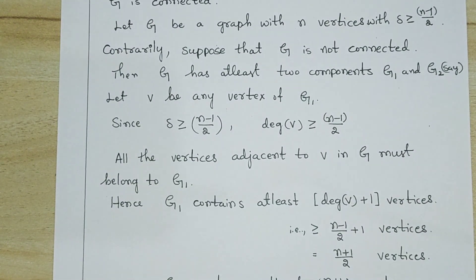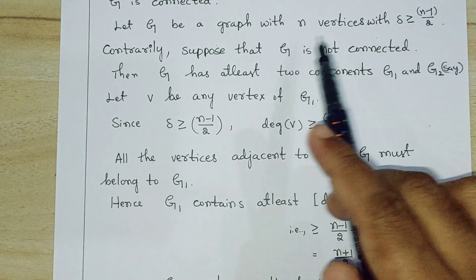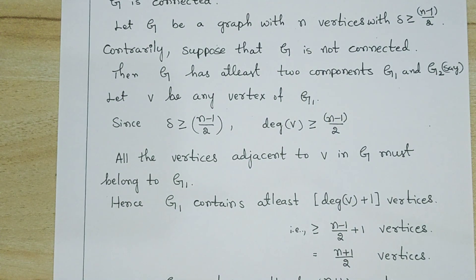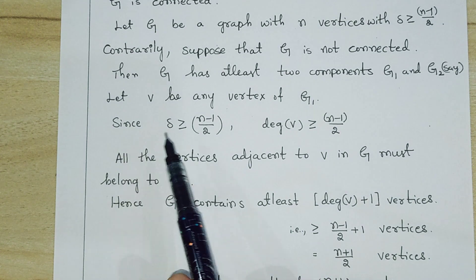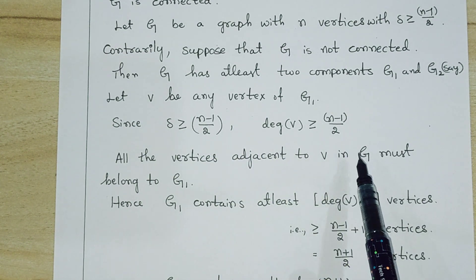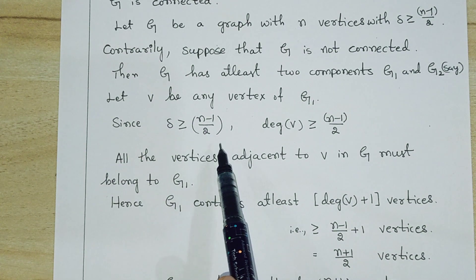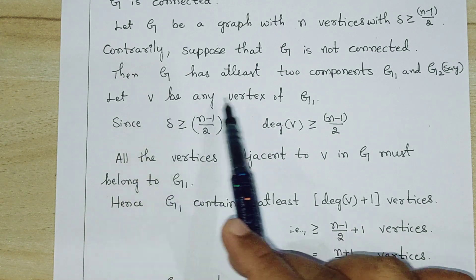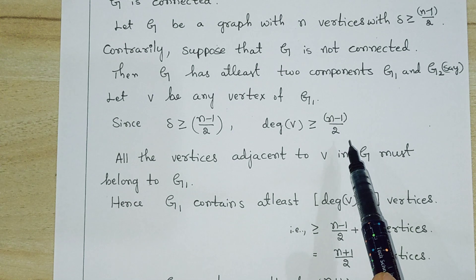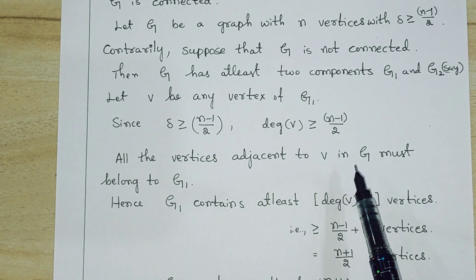We are looking for a contradiction using our hypotheses: G is simple, δ ≥ (n−1)/2, and G has n vertices. Let v be any vertex of G1. Since δ ≥ (n−1)/2, the degree of v is also ≥ (n−1)/2. Since G is simple, all vertices adjacent to v must also belong to G1 — they cannot be in a different component.